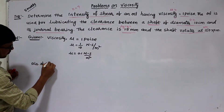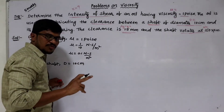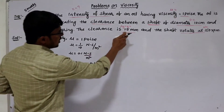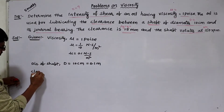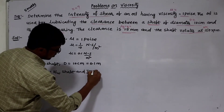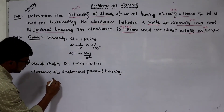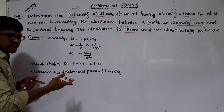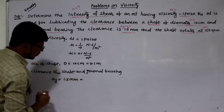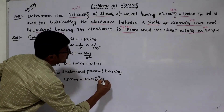Diameter of shaft is capital D equal to 10 centimeters. Since 1 centimeter equals 1/100 meters, D equals 0.1 meters. The clearance between the shaft and journal bearing, denoted by dy, is 1.5 millimeters. Since 1 millimeter equals 10 to the power of minus 3 meters, dy equals 1.5 times 10 to the power of minus 3 meters.